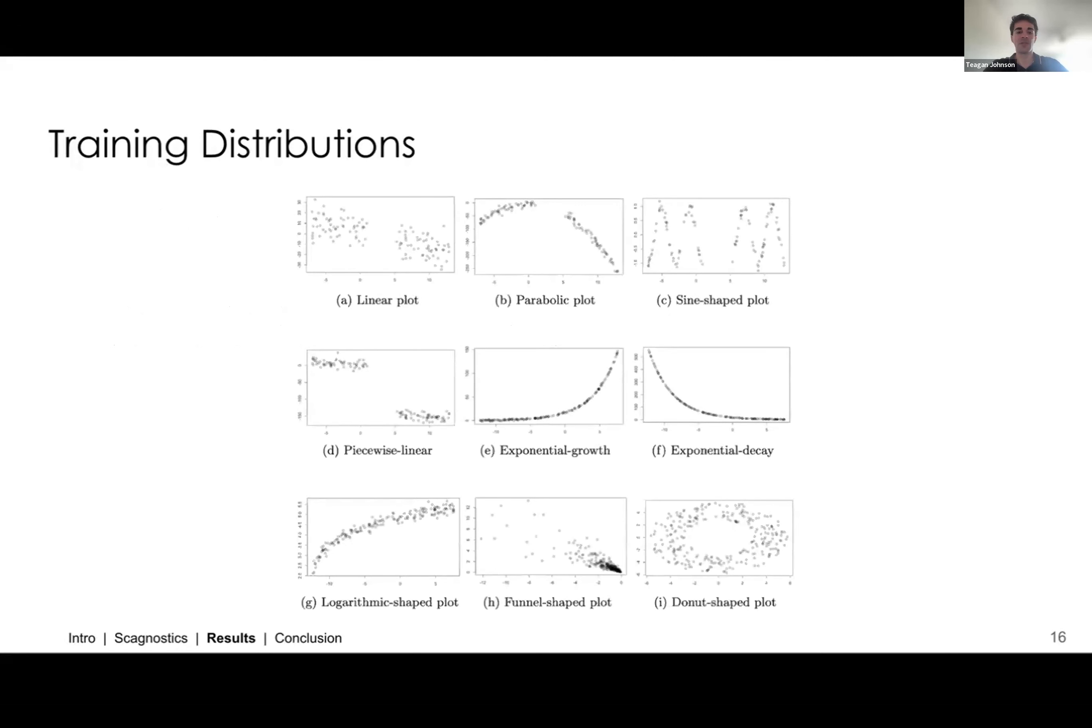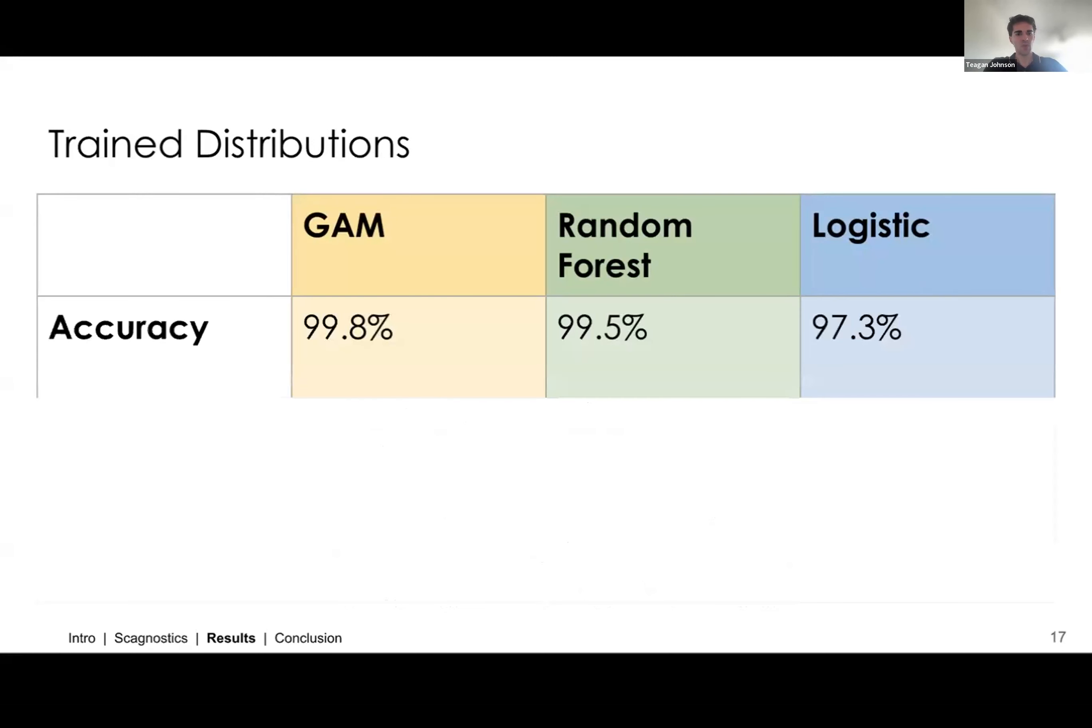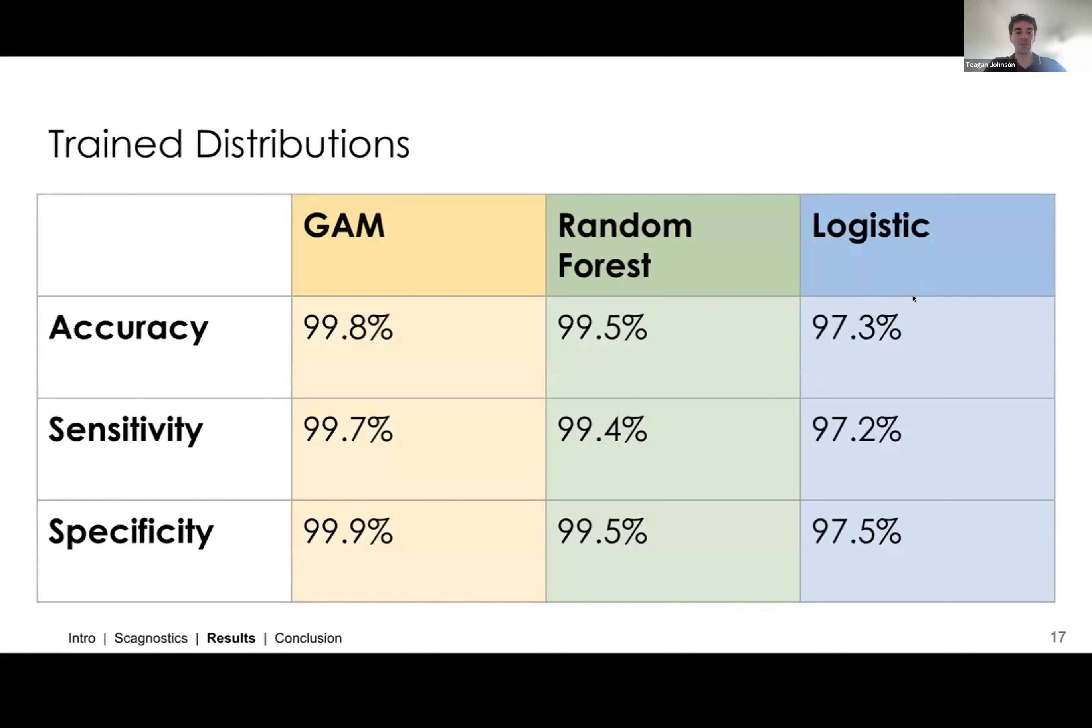After we had selected our three models, we generated our training and testing data. So for our first pass through our analysis, we generated nine different types of plots shown here. We randomly generated different iterations of each of these plots. And then once we had a big set of these plots, we split into training and testing. And in our next slide, we can see that when we looked at the performance of these three models across this training data, we saw really high accuracy, sensitivity, and specificity across all three models.